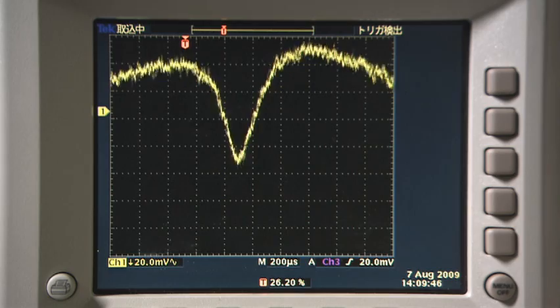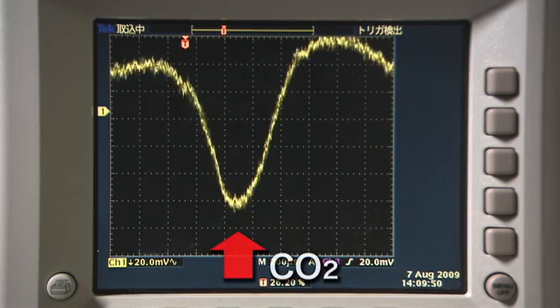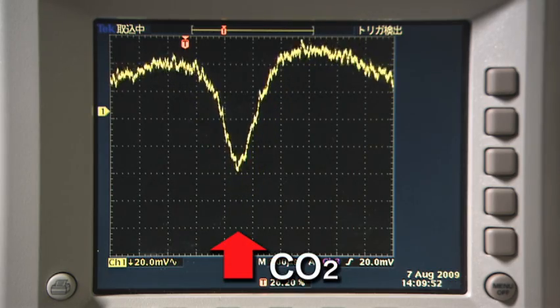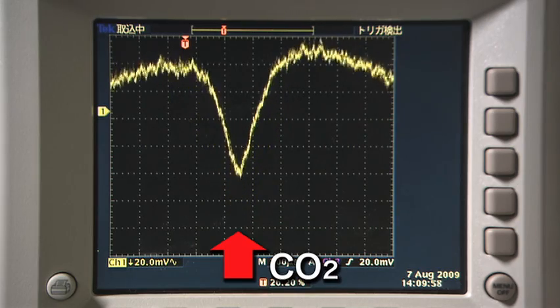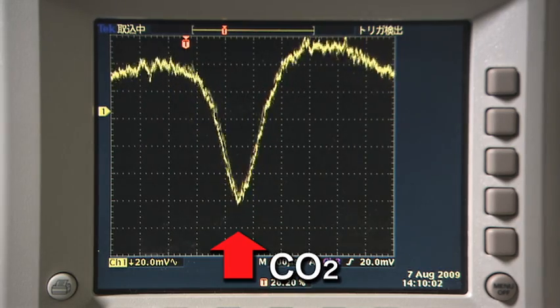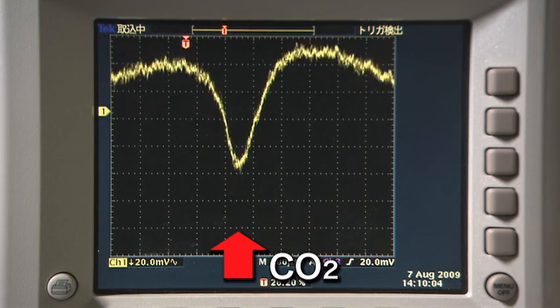The waveform on the oscilloscope shrinks significantly. This wavelength is an absorption wavelength of carbon dioxide gas. This shows real-time measurement of the carbon dioxide gas in the tester's breath.